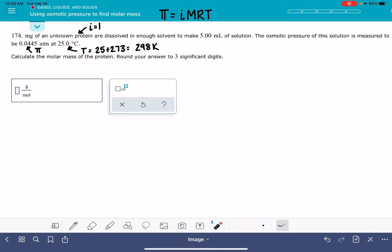Let's calculate the molar mass. Let's see what information we have. We know π, we know i, we know R because it's a constant, and we know the temperature. So we have enough information to calculate molarity. That might not seem like it makes sense for us to be calculating molarity, but let's just go with it. We'll figure everything out in the end.